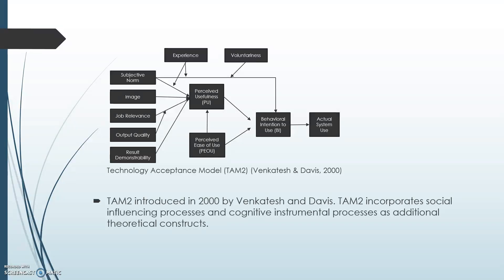Voluntariness simply refers to the extent that potential adopters view the system as non-mandatory. This goes back to previous studies noting that behavioral intentions differ initially when users are mandated to use a system versus being able to make a choice in whether or not to use a system. Image is the degree to which use of an innovation is perceived to enhance one's status in one's social system — in other words, will use of the system make one more acceptable by their peers or superiors, or give them a higher social status.